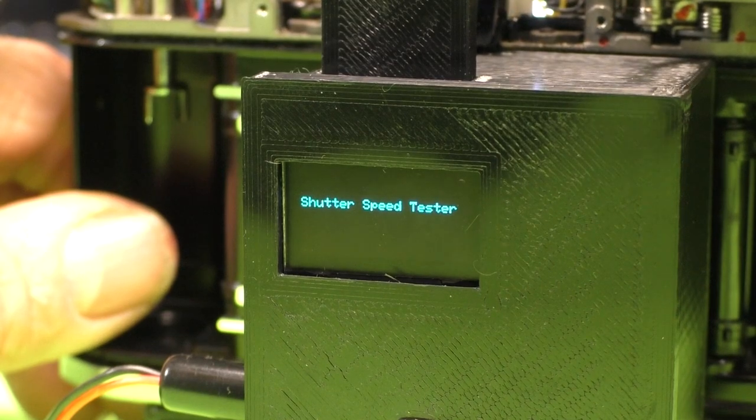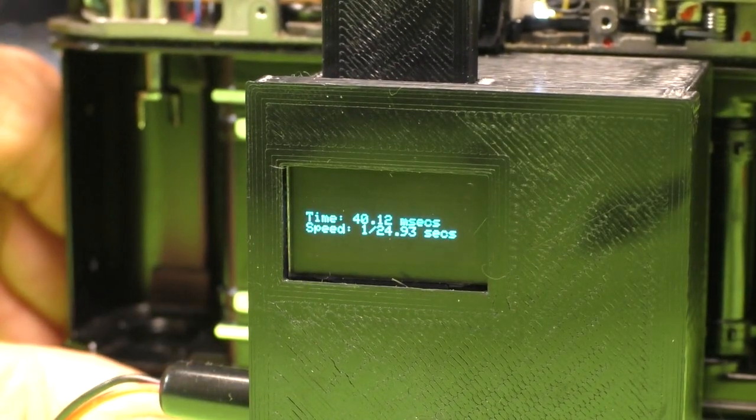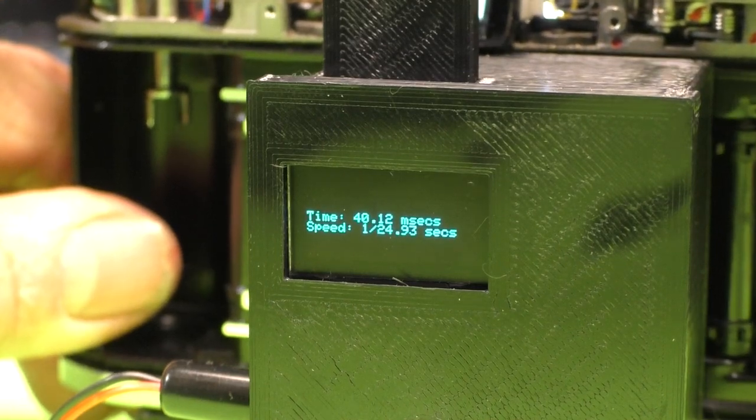Let's check the slow speeds just for fun. This is a 30th. It's 1/24. Not too bad.